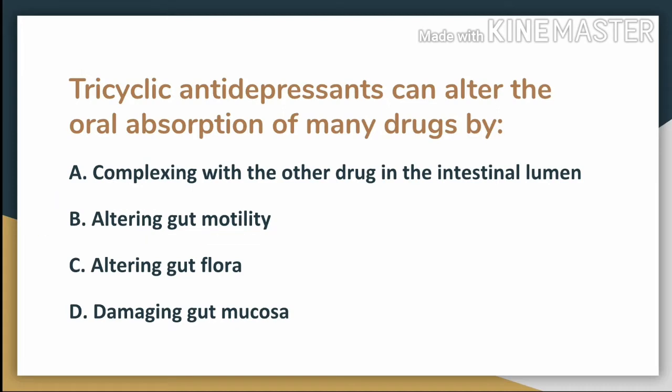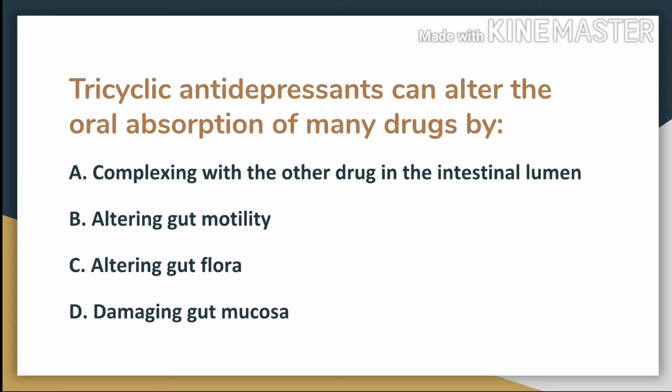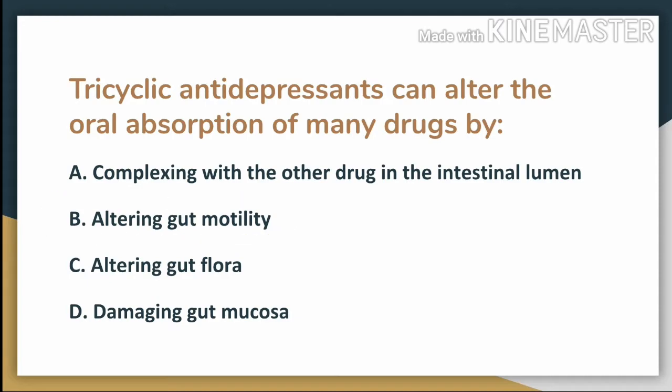The answer here is B. By altering gut motility, tricyclic antidepressants will affect the oral absorption of many drugs because they have anticholinergic properties, so they will delay gastric emptying and also retard the absorption of other drugs.